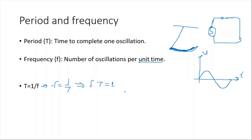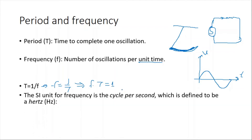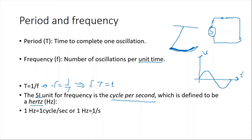The SI unit for frequency is cycles per second, which we call Hertz. So 1 Hertz equals 1 per second, or second to the negative one.